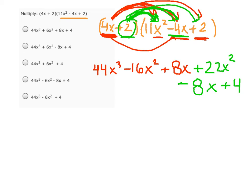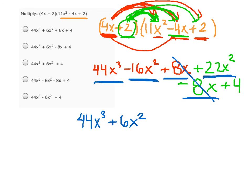So now that we're done distributing, we can combine like terms. We start with the x cubed. We don't have any other x cubed, so that remains in the answer, 44x cubed. We have negative 16x squared and 22x squared. So that becomes positive 6x squared. Then we have 8x and we're going to subtract 8x. So those become 0. And then we still have this 4 at the end, so plus 4. So option C is the correct answer.